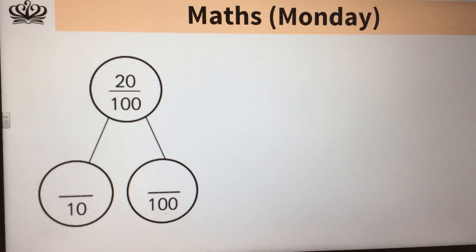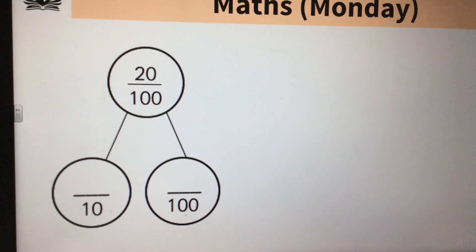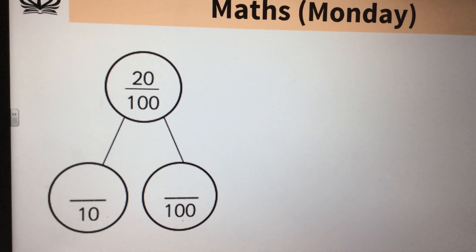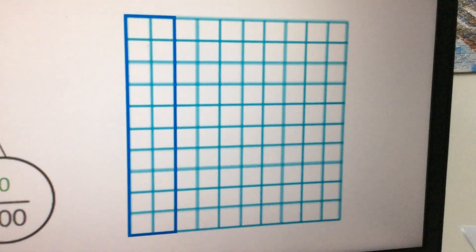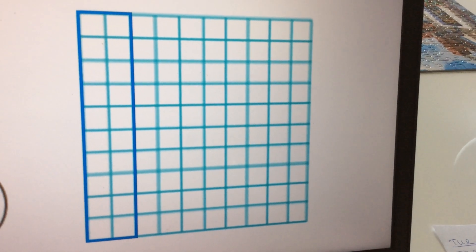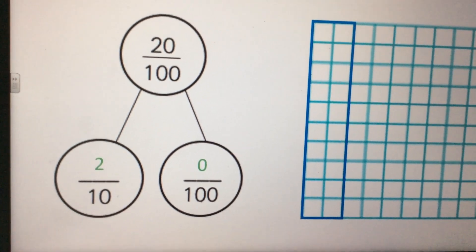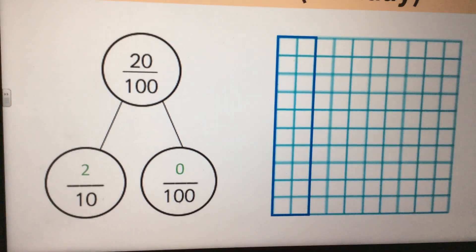Let's have a look at this next one, twenty-hundredths, so how many tenths would that be if we'd had twenty-hundredths coloured in on that hundredth square? So we've got twenty-hundredths there, so how many tenths is that? That's two-tenths and zero-hundredths there.